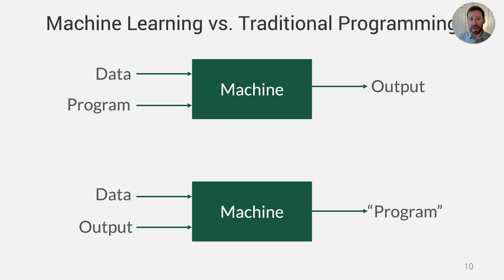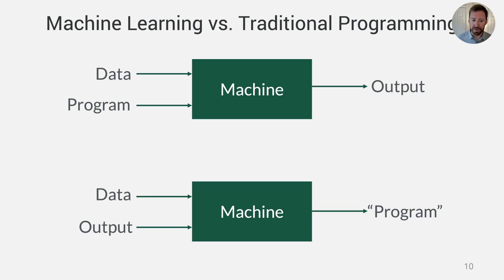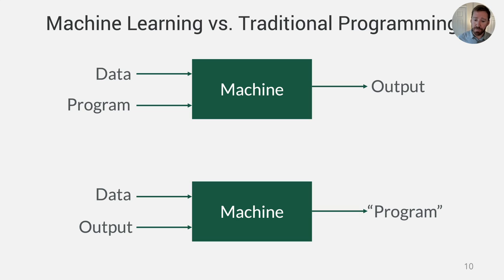It's important to understand the differences between machine learning and traditional programming. With traditional programming, you write a program to process data and produce output. With machine learning, this paradigm is different: you take data and the expected output, and you expect the machine to essentially learn or infer the program. The problem is typically very difficult to pin down analytically in code, so it's easier to have the machine learn the program by observing a large set of data.